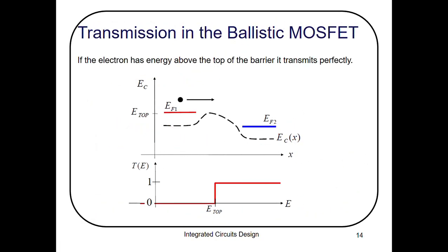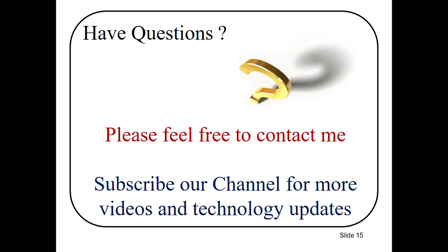Regarding transmission in the ballistic MOSFET: if the electron has energy above the top of the barrier, it will transmit perfectly. The energy position diagram shows that if the electron energy is above the barrier it is easily transmitted. That was the lecture for today — if you have any questions please feel free to contact me. Thank you very much, see you next time.